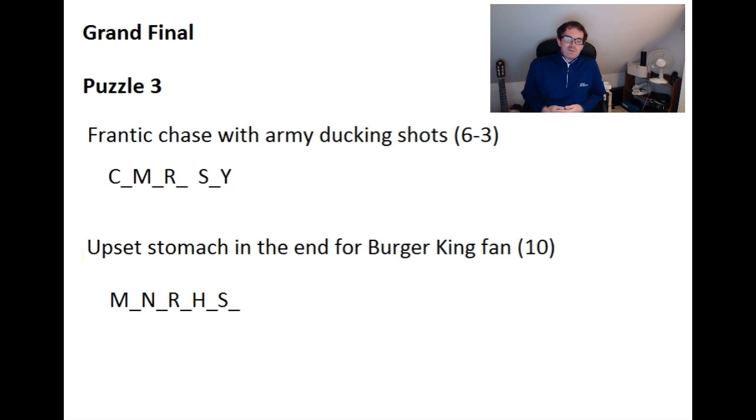And then the second clue, well, this was quite hard to see where the split needs to come. It actually needs to come after the word burger. So the definition here is king fan. And then what you've got is an anagram of stomach in and an R which is the end for burger. So the last letter of burger is an R. You anagram all those up and you can come up with the word monarchist, which of course is a king fan. So upset stomach in the end for burger king fan is nothing to do with fast food joints and instead to do with royalists. Wonderful, wonderful puzzle.